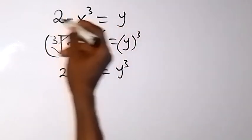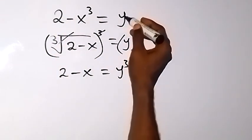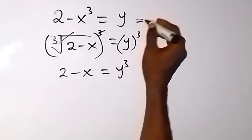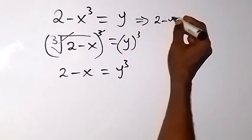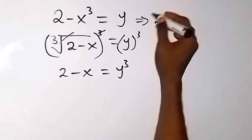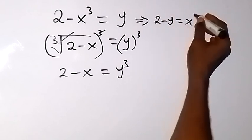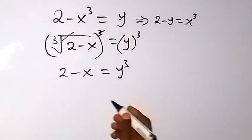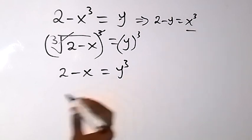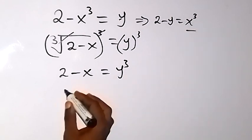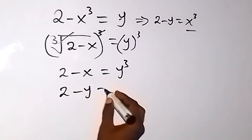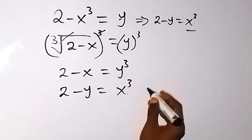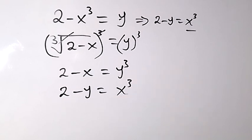From this we can also swap x and y and say this implies 2 minus y equals x cubed. So when we take y here and x cubed there, we have that. So we now have 2 minus y equals x cubed.